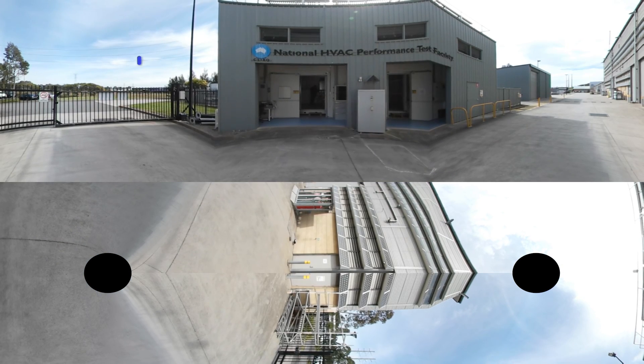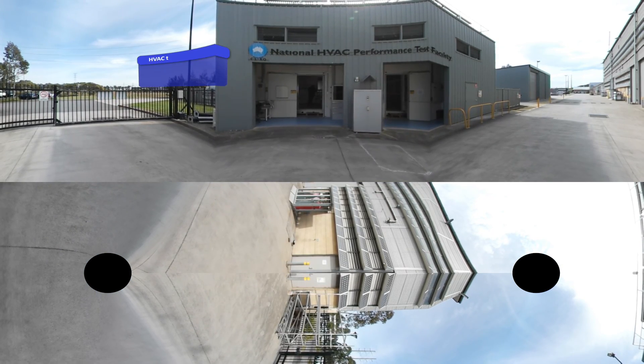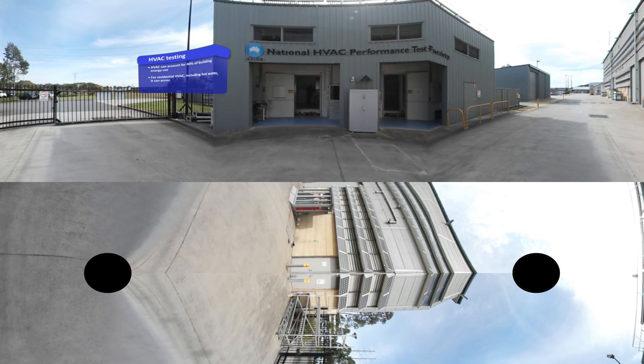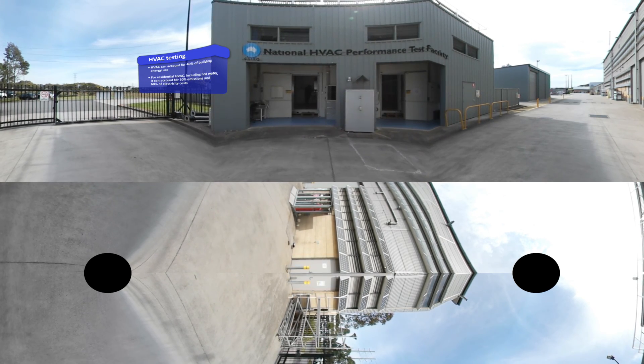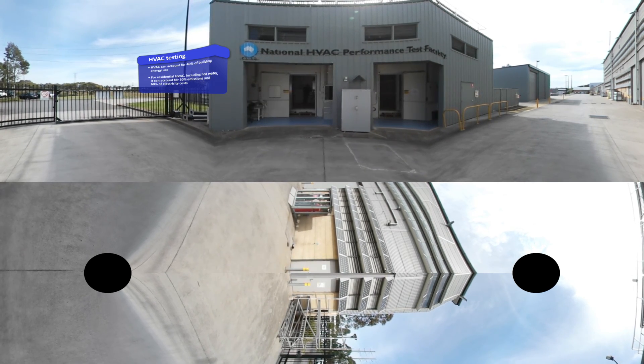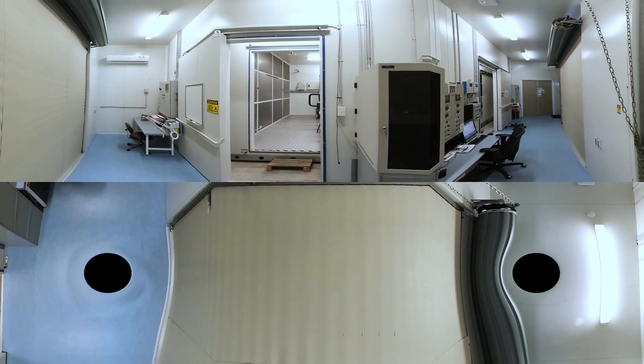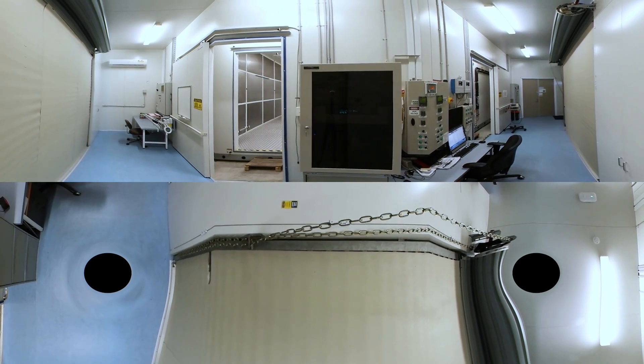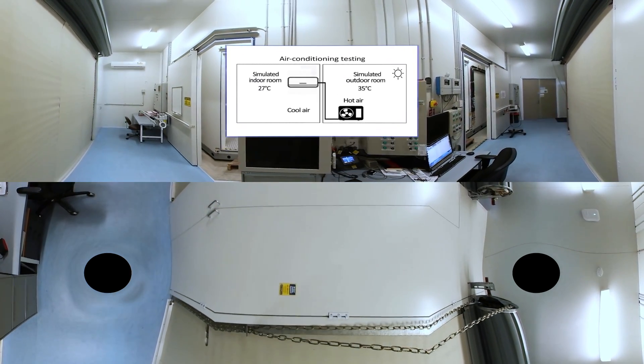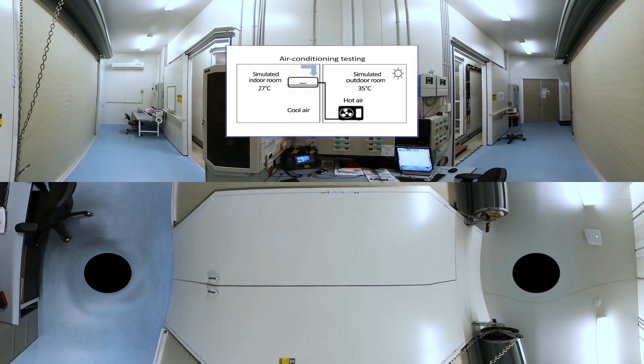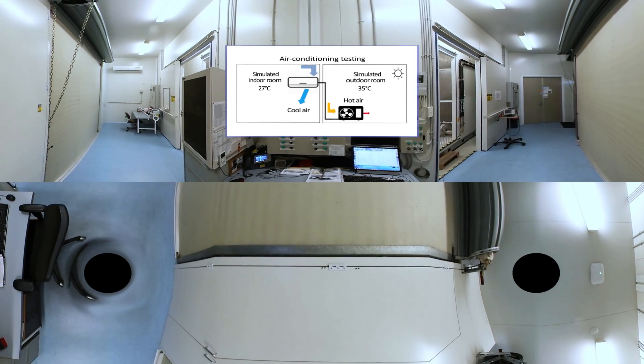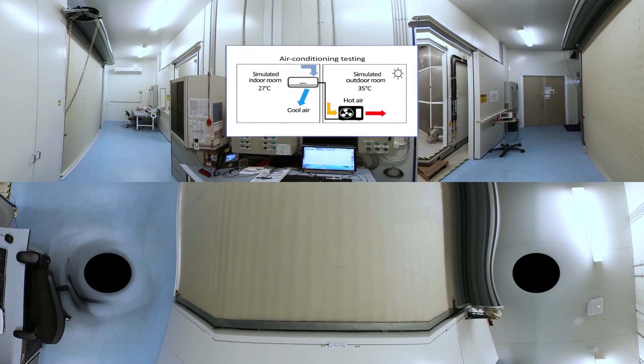Our National Heating, Ventilation and Air Conditioning performance test facility may not have a jazzy name, but it performs some impressive research to evaluate conventional and solar powered air conditioning systems. Inside we have two test rooms that can mimic conditions around the world to examine how well air conditioning systems perform, specifically how well they work and how much energy they use.